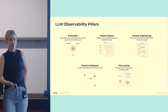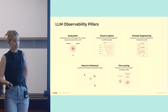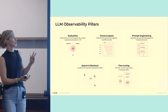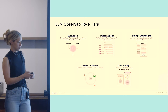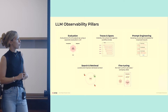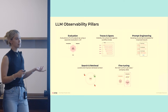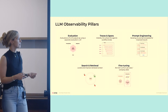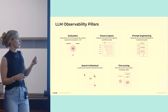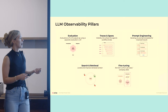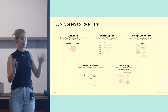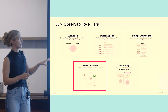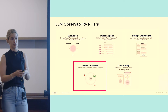So, LLM observability pillars. I work at Arize, which is an AI observability company, and these are the main areas we cover for LLM observability. You have your evaluation, you have your traces and spans, prompt engineering and fine-tuning — which we're more familiar with, since we've been fine-tuning models for years. The newer areas include search and retrieval, RAG methods, which are increasing in popularity, and the latest steps have really been around traces, spans, and evaluations.